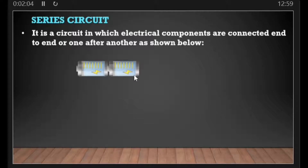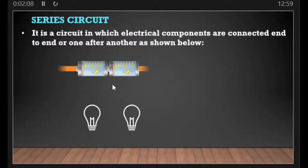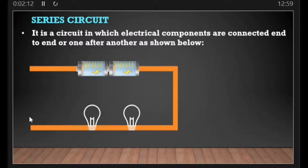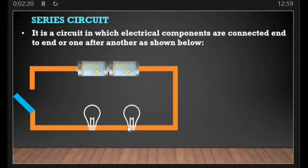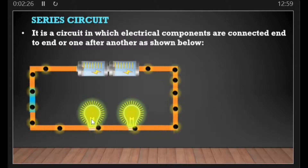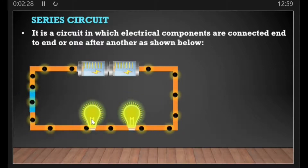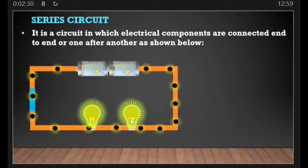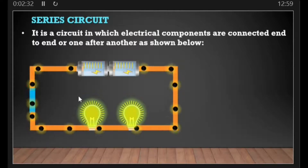If we have a cell here, another cell here, then a bulb here, another bulb here, and we connect conductors and a switch, such a circuit is called a series circuit. When we switch it on, we are able to see the bulbs come on and electrons flowing.